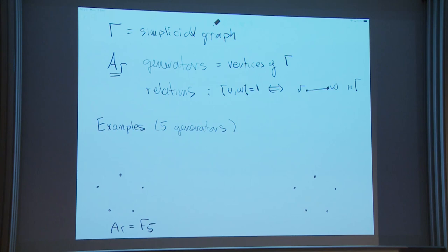On the other extreme, I could take the same five generators and draw an edge between every pair of vertices. Every two generators commute, so that's the free abelian group.